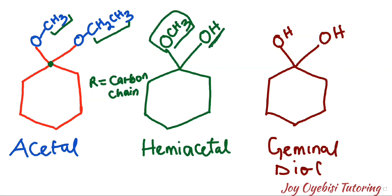For hemiacetal, you have one OR group and then you have an alcohol OH group, both attached to the same carbon. When you have this situation we call that a hemiacetal. It's not a full acetal — for a full acetal you need two OR groups attached to the same carbon, but here you have one OR group and one OH group.